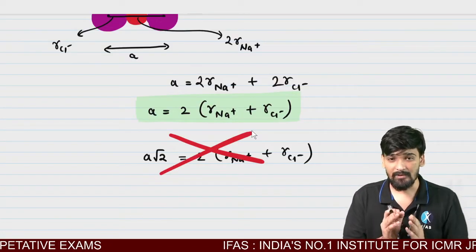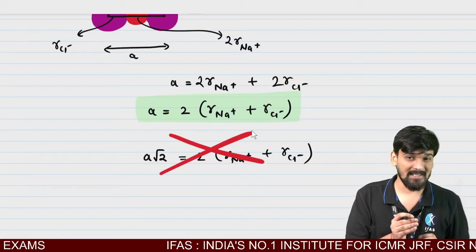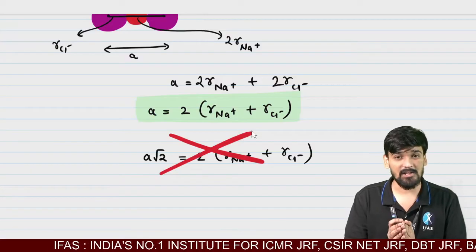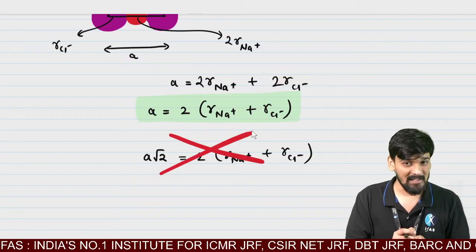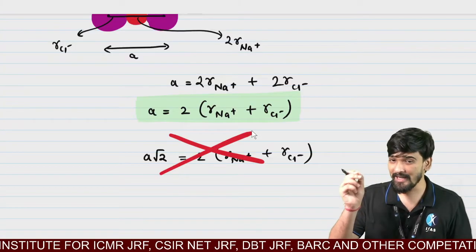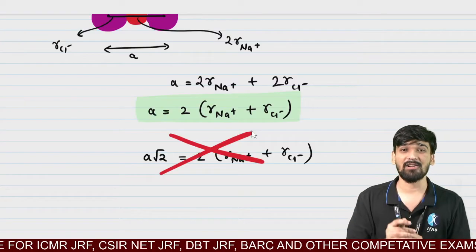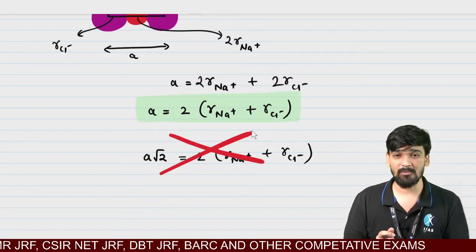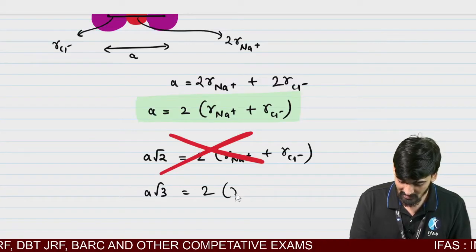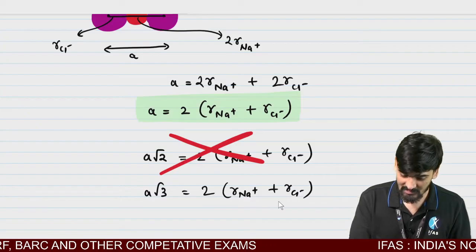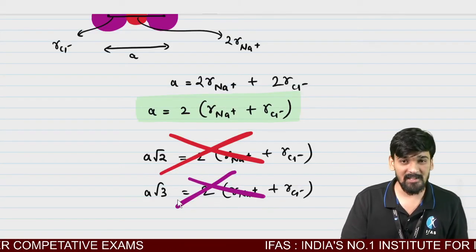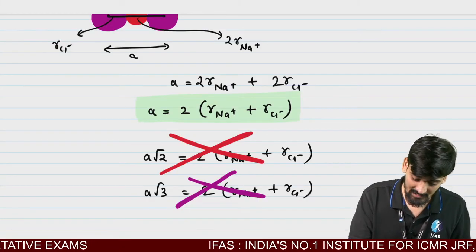Sometimes students also mistakenly think that Na+ and Cl- are touching along the body diagonal. That relation is also wrong, because the Cl- atoms at body-centered octahedral positions and Na+ atoms are not touching along the body diagonal. These are common misconceptions and general confusion. The correct relation is that atoms only touch along the edge length, and that is the correct relation.